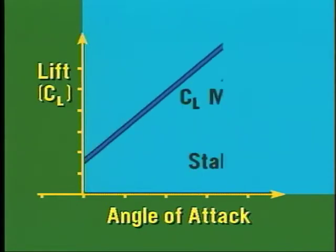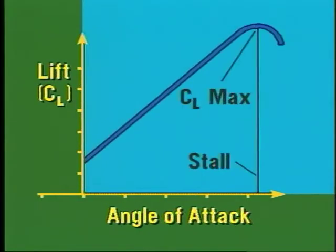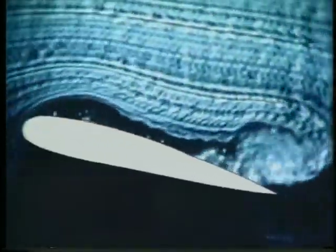Each airplane has an angle of attack where maximum lift occurs. This point is known as CL max. Beyond this point, the airflow begins to separate from the wing surface, becoming so turbulent that the airfoil can no longer create lift. At this point, the wing is in a stalled condition.